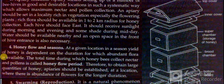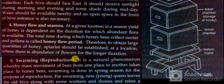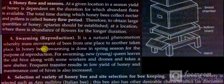Honey flow and seasons: At a given location, in a season, the yield of honey is dependent on the duration for which abundant flora is available. The total time during which honeybees collect nectar and pollen is called the honey flow period. Therefore, to obtain large quantities of honey, an apiary should be established at a location where there is an abundance of flowers for a longer duration.